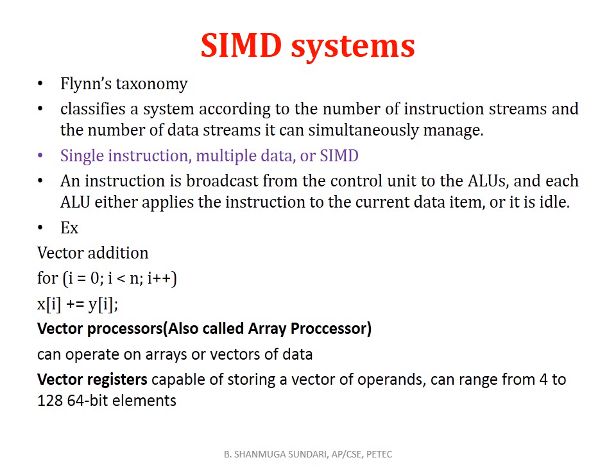The next concept is SIMD systems, that is Flynn's Taxonomy. It was proposed by Michael Flynn in 1966. It classifies systems according to the number of instruction streams and the number of data streams they can simultaneously manage. SIMD stands for Single Instruction Multiple Data. A stream represents a sequence of items; a data stream is a sequence of data on which operations are performed, and an instruction stream is the sequence of machine instructions read from memory.